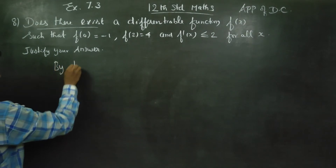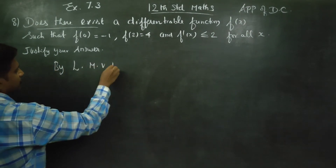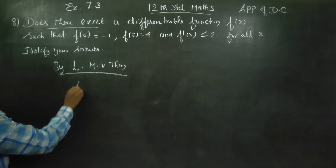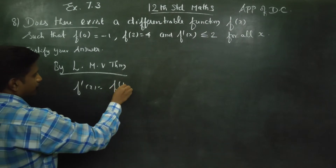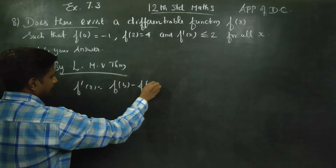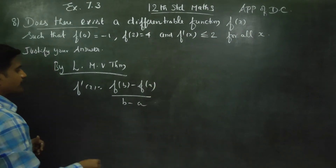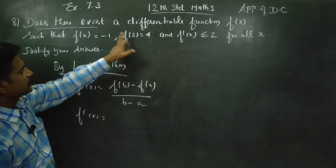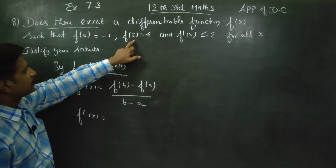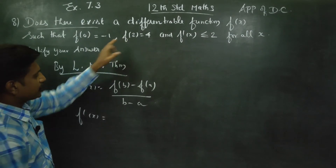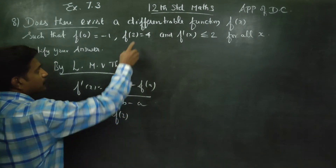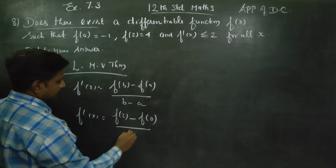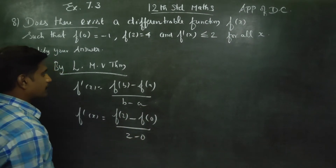By Lagrange's mean value theorem, f dash x is equal to f of b minus f of a, divided by b minus a. This is our formula. Here, the interval is 0 to 2, so a is equal to 0 and b is equal to 2. So f of b is f of 2, f of a is f of 0, and b minus a is 2 minus 0.